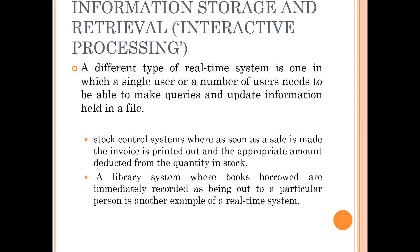Regarding information storage and retrieval: a different type of real-time system is one in which a single user or a number of users needs to make queries and update information held in a file. An example would be stock control systems, where as soon as a sale is made, the invoice is printed out and the appropriate amount deducted from the quantity in stock. Another example would be a library system, where books borrowed are immediately recorded as being loaned to a particular person.